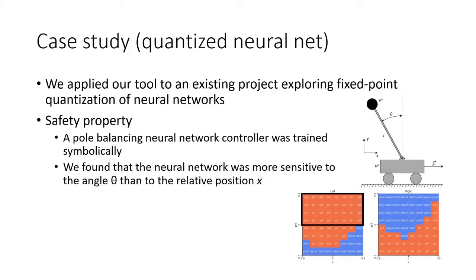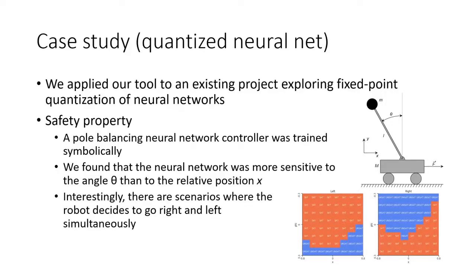Interestingly, we found that there are possible neural networks where the controller will decide to go left and right at the same time. Some of these areas are highlighted in the table. This happens despite the clear symmetry of the problem.